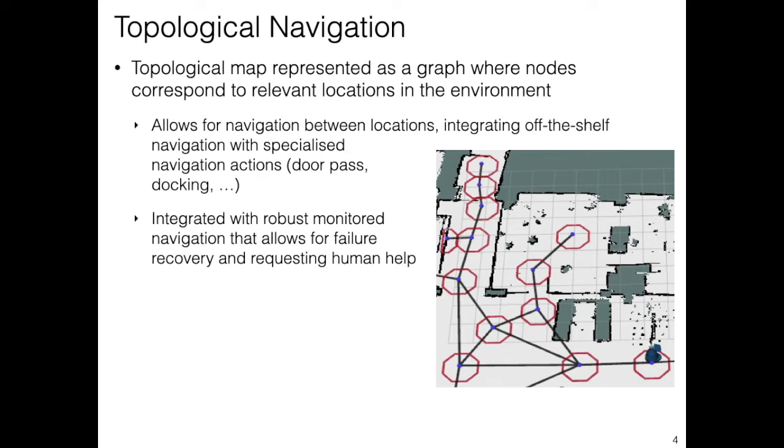In order to tackle this problem, we start by discretizing the environment into a topological map, where nodes represent relevant locations and edges represent navigation actions between those nodes. These actions can be off-the-shelf, such as ROS move-based navigation, or they can be specialized actions, such as going through a door or docking to a charging station.